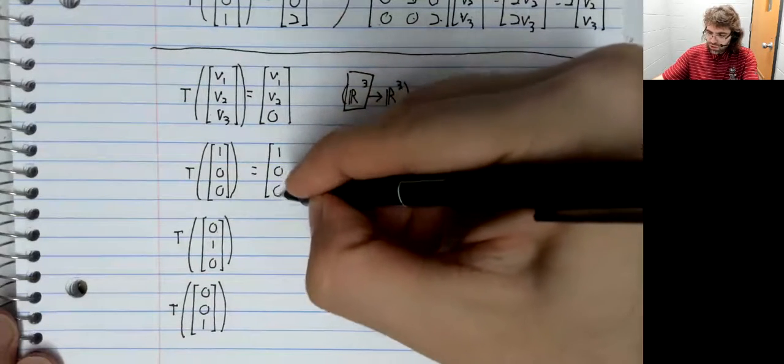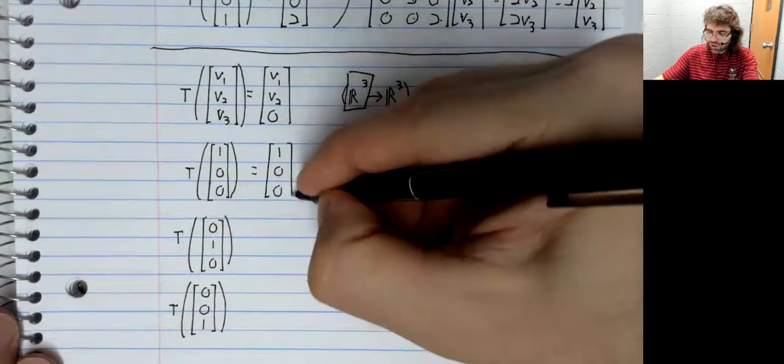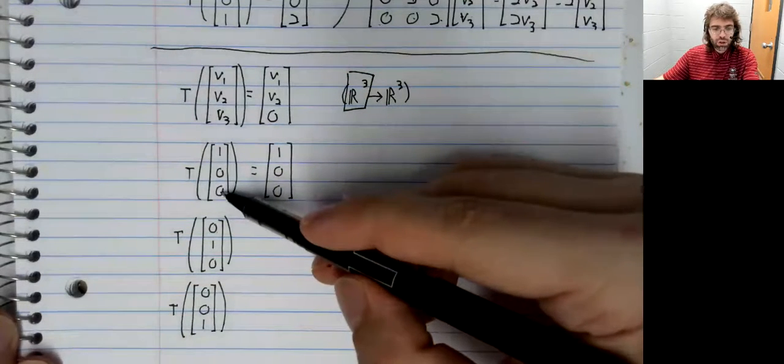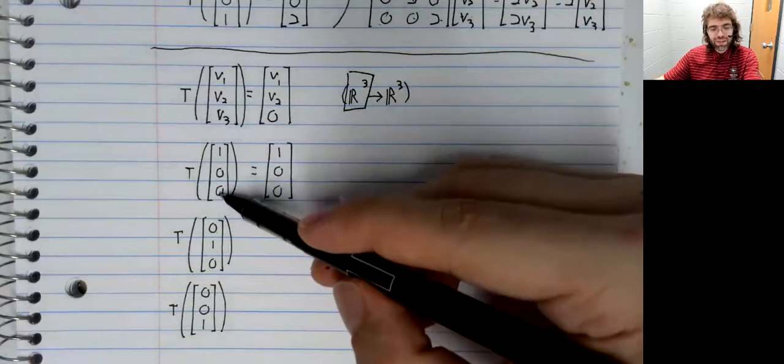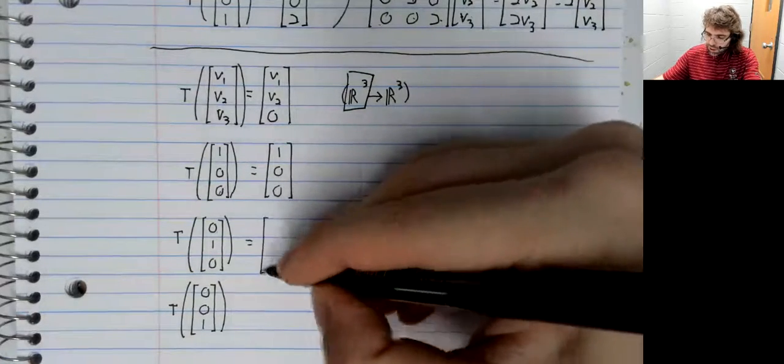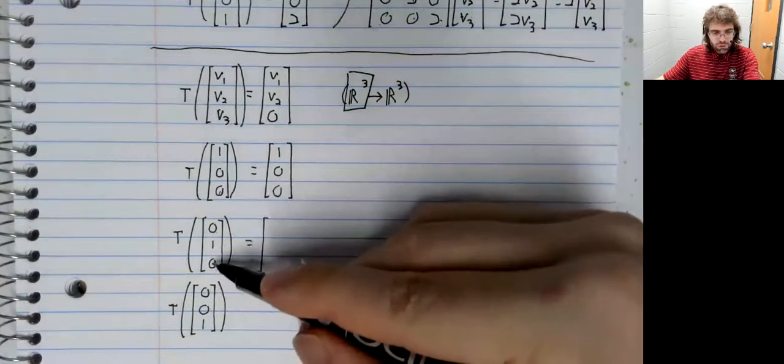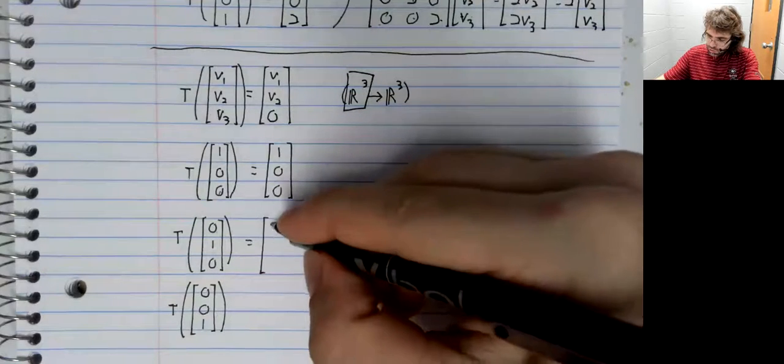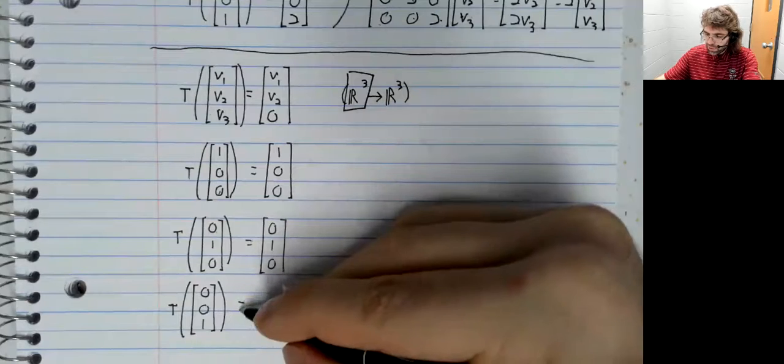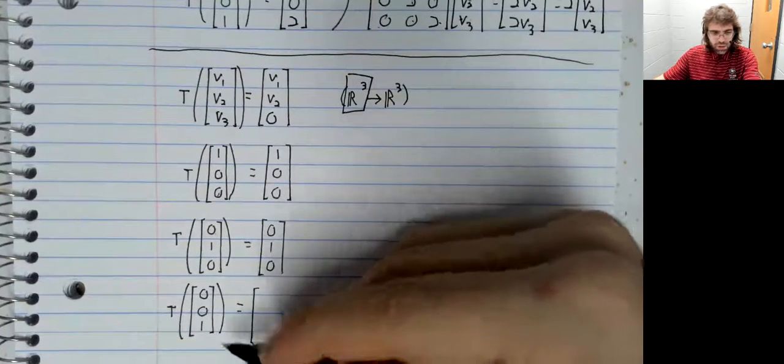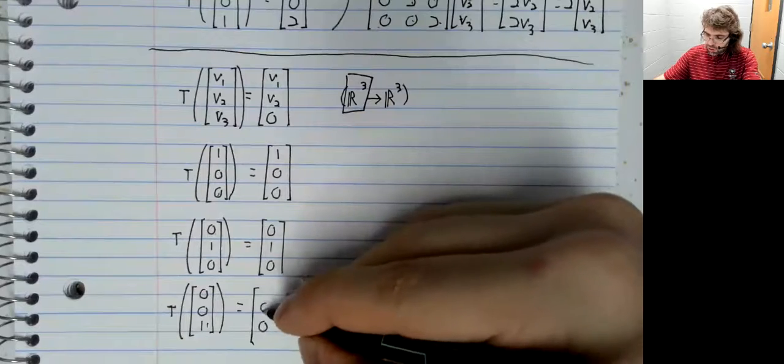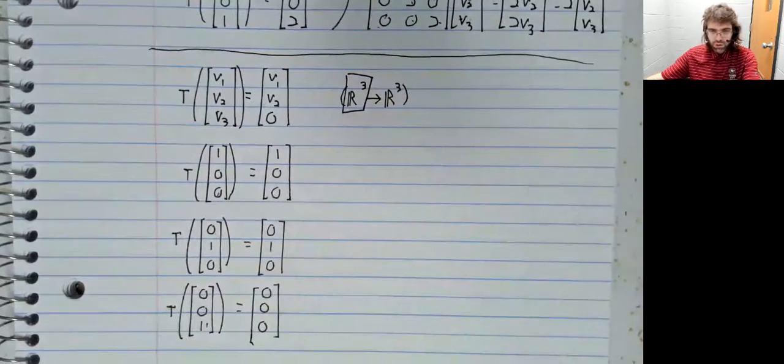Now turning this first element to zero doesn't do anything. It was already zero. Likewise, this is already zero, so turning it to zero doesn't do anything. But here, this one gets turned to zero.